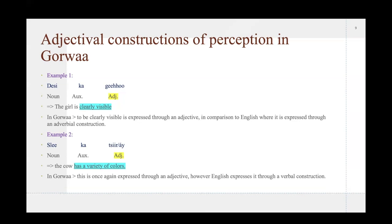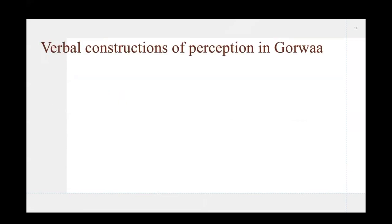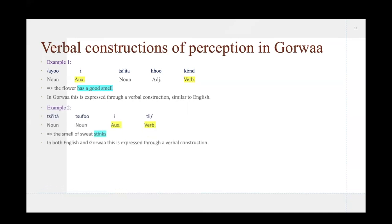Example three is paraito ki buo, which means the inside of the house is dark, but in this case both English and Gorwaa actually utilized an adjective, so there's a similarity in this case. So, the second way of expressing perception in Gorwaa that I found was verbal constructions. In the first example we have ayo i tzi ita hu hond. The flower has a good smell. So in Gorwaa and English, they both express this through a verbal construction, so to have a good smell, or to be good smelling.